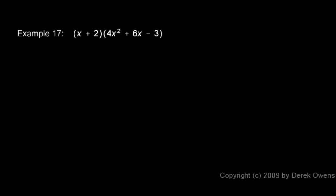In Example 17, I have x plus 2 multiplied by 4x squared plus 6x minus 3. I can't do a FOIL because FOIL only works with binomials, but the main concept of multiplying polynomials is that each term in one polynomial gets multiplied by each term in the other. So I'll start with the x and multiply it by each of those three. x times 4x squared gives me 4x cubed. x times 6x gives me 6x squared. And x times negative 3 gives me negative 3x.